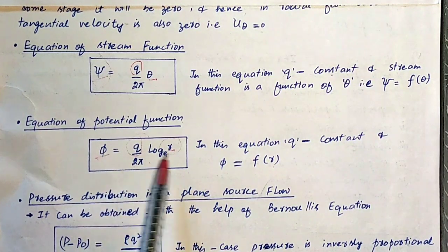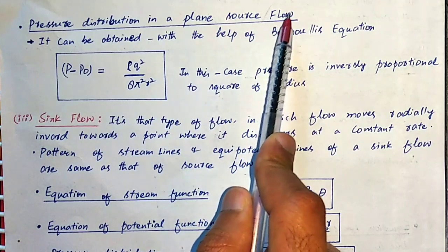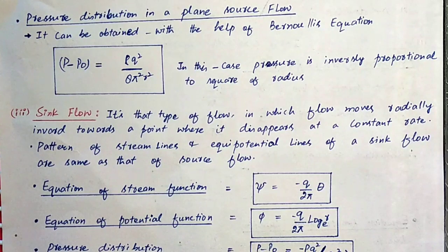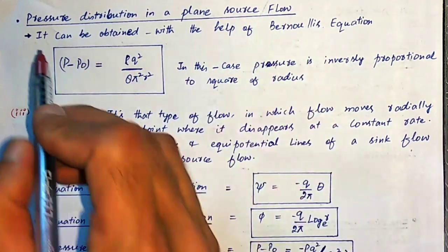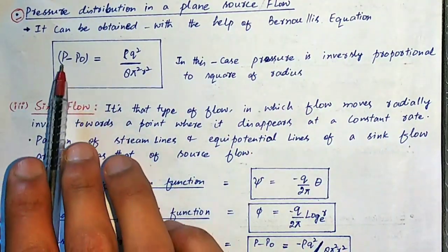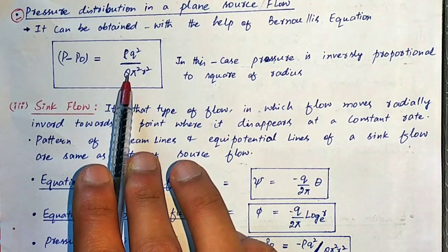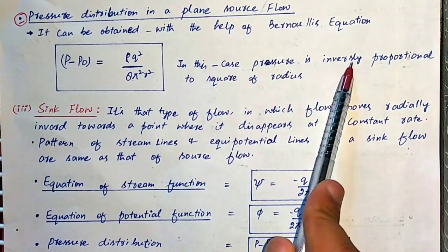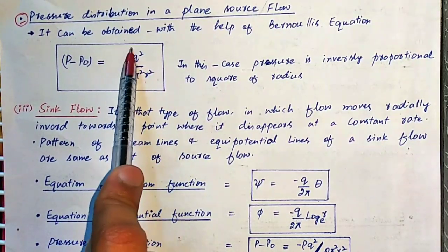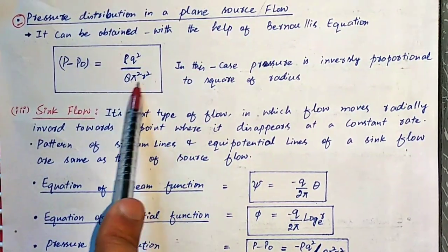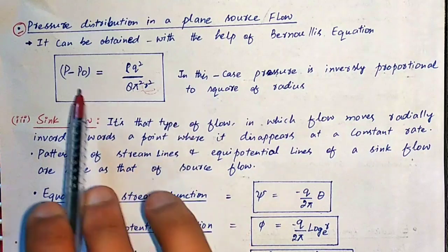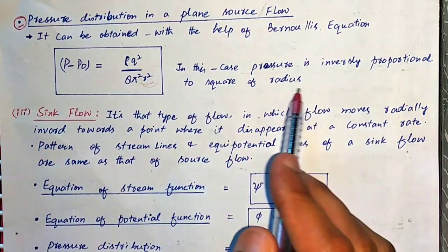That is why phi is a function of r. For pressure distribution in a planar source flow, it can be obtained with the help of Bernoulli's equation. The result is: P minus P-not equals rho into Q squared upon 8π²r². In this case, pressure is inversely proportional to the square of radius, because rho, Q, and pi are constants — only the radius value varies.